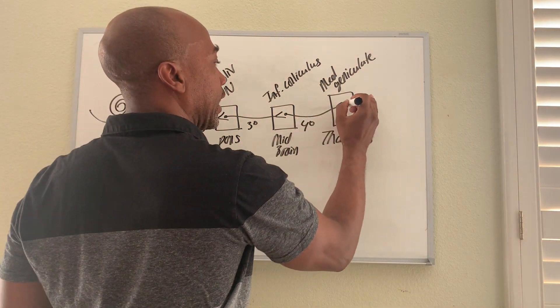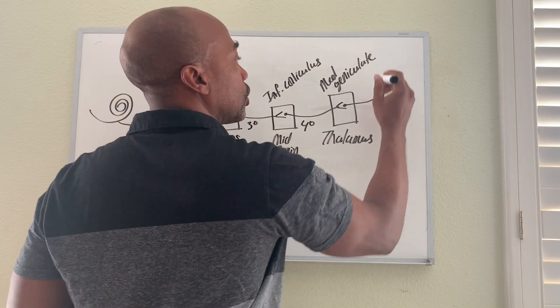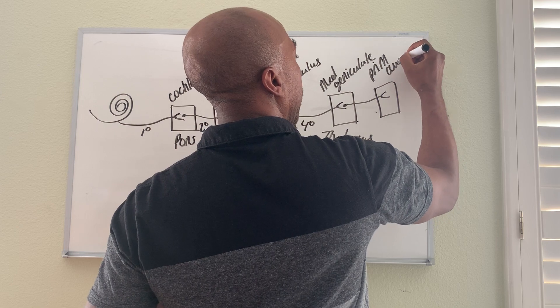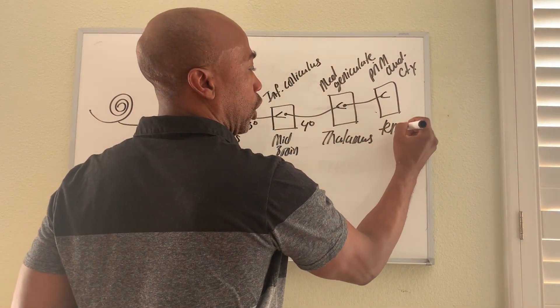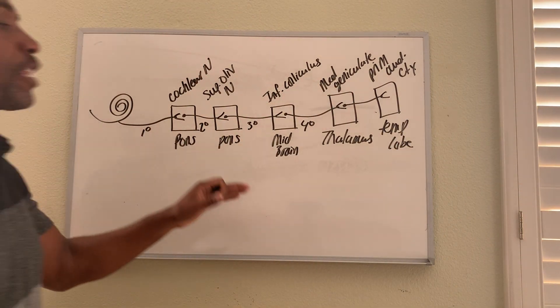And finally a fifth neuron travels up to your primary auditory cortex, which is in your temporal lobe. And then you can perceive the sound. So this is the five neuron pathway for getting sound from the cochlea all the way up to your primary auditory cortex.